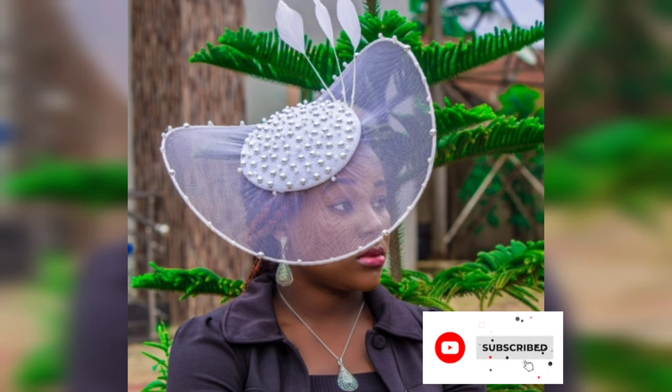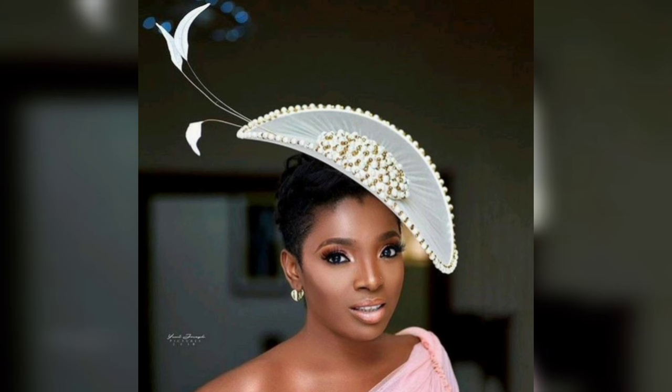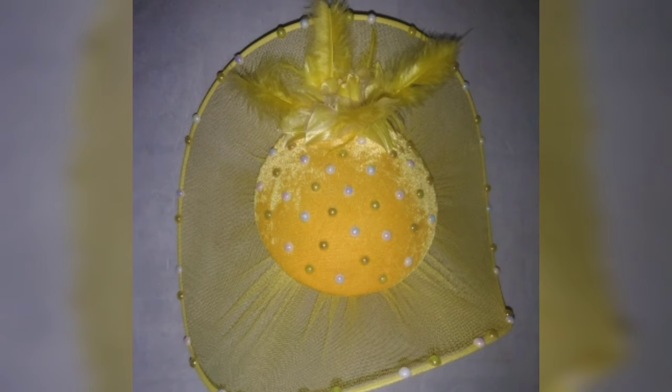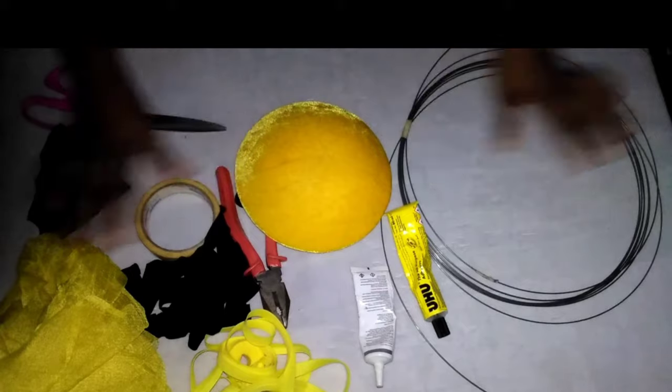To make your satellite fascinator this big, the millinery wire should be measured 61 inches in length. For this yellow satellite fascinator you're seeing here, it's not as big as that white one I showed you. The millinery wire used here is measured 56 inches in length. These are the materials that will be used for this training.